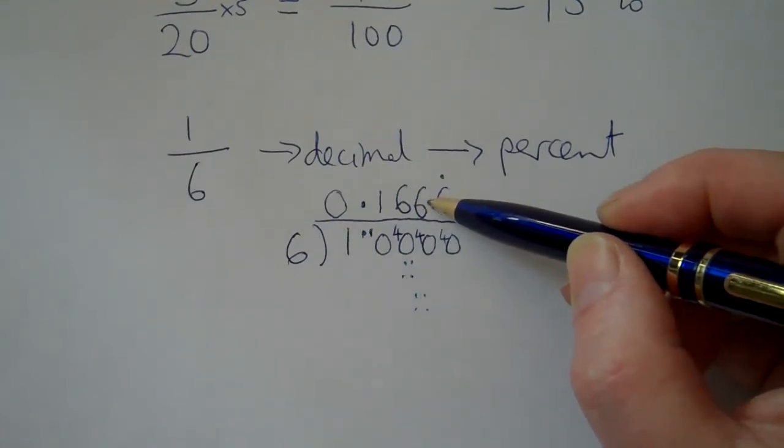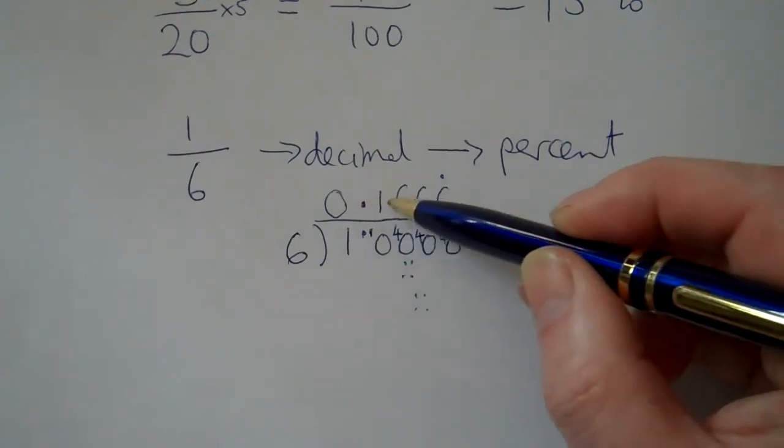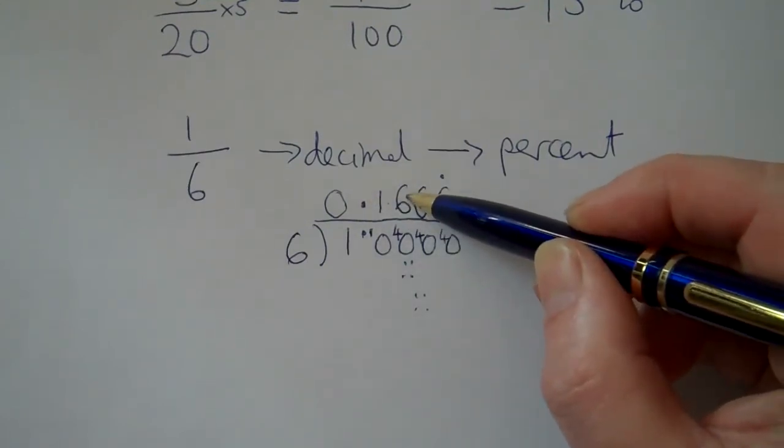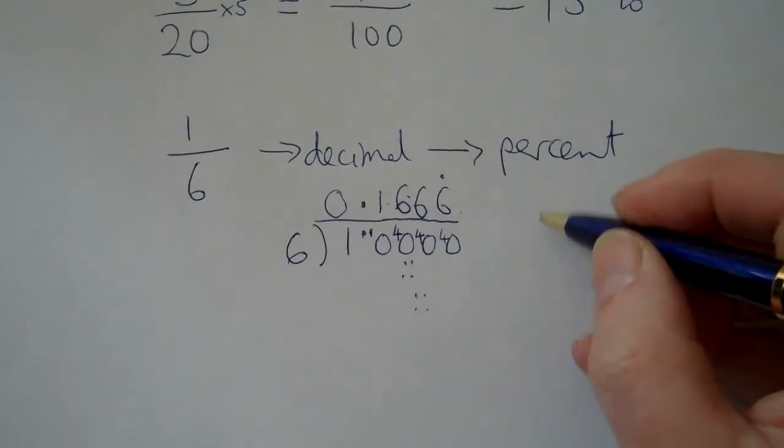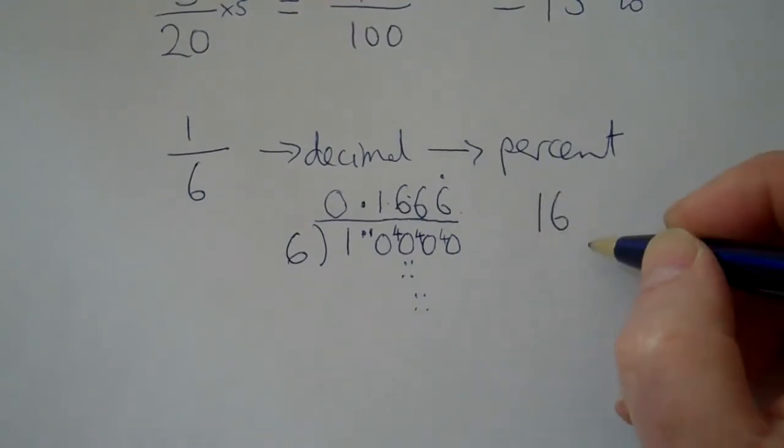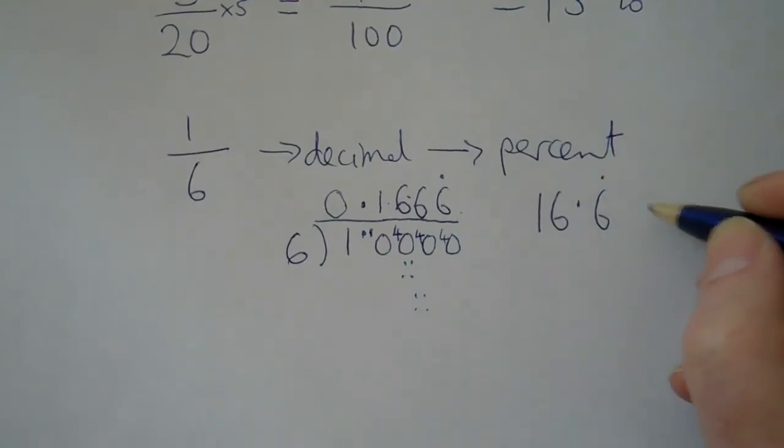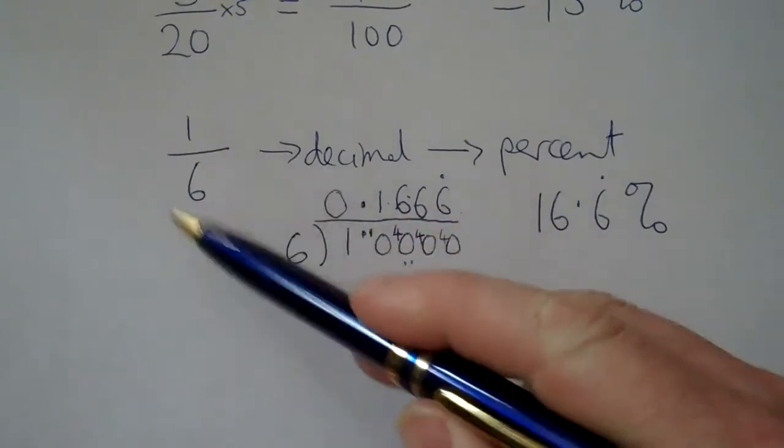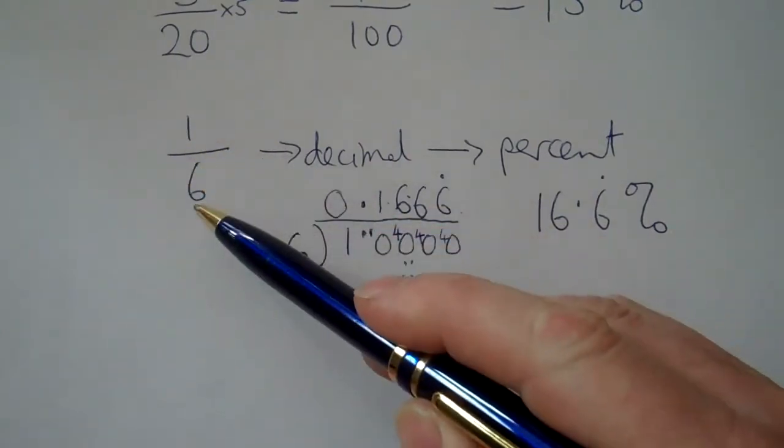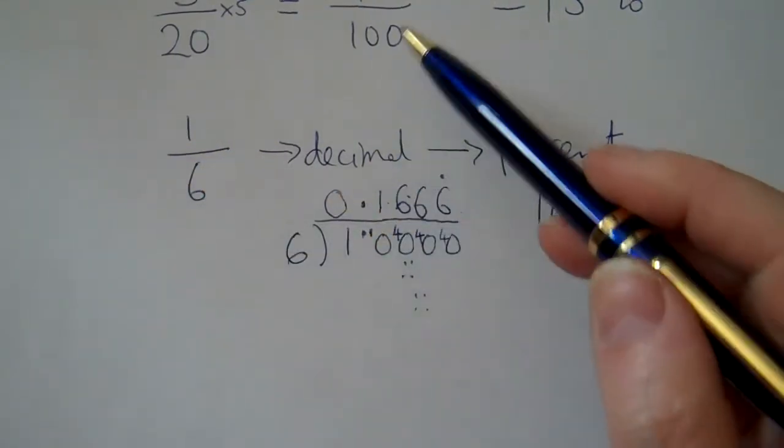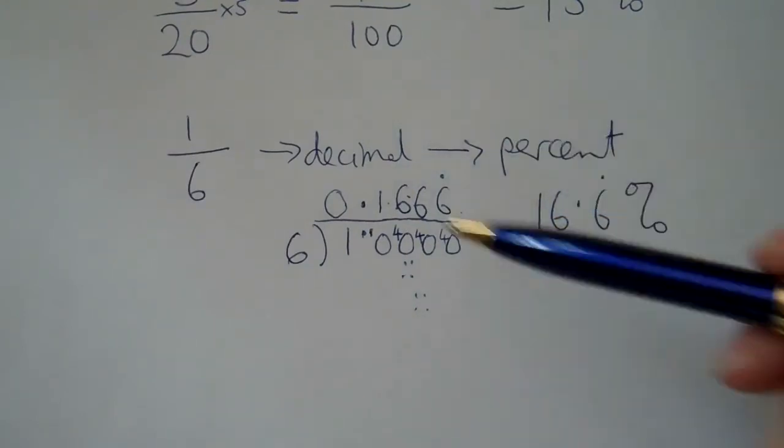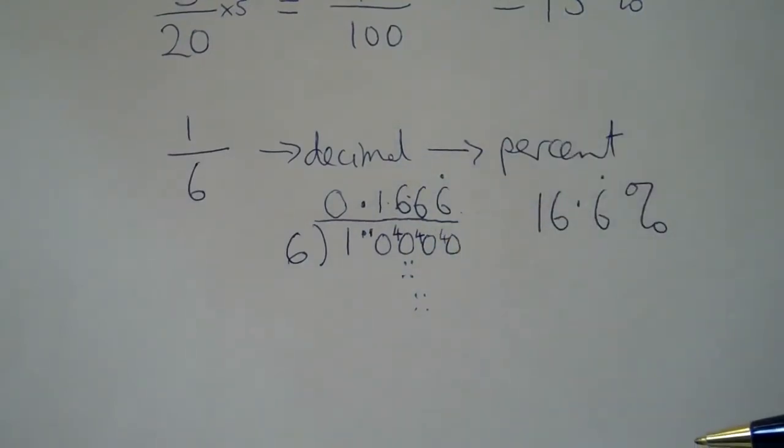So if I move this one two decimal places to the right, I get sixteen point six percent recurring. I said it the wrong way around, sixteen point six recurring percent. So that's how you can do it with a fraction whose bottom number doesn't immediately go into a hundred. Or if you just don't know whether it does or doesn't, you can do it this way and it'll still work out right.